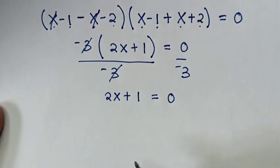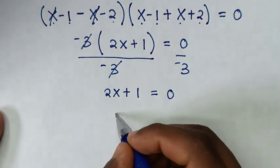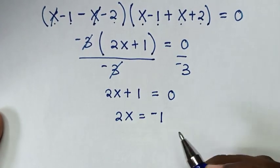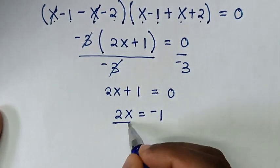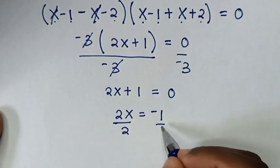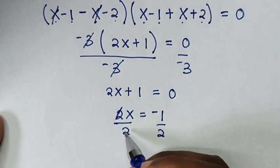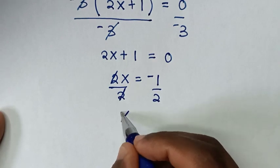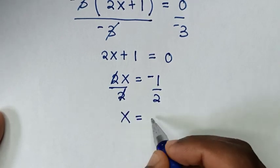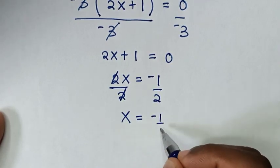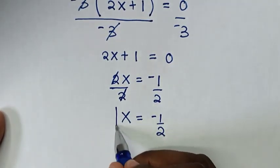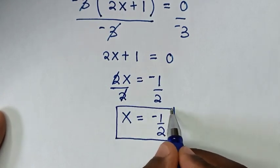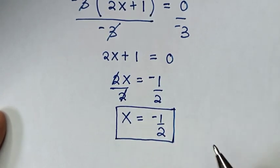In the next step we take 1 to this side, so it will be 2x is equal to negative 1. Then we divide by 2 on both sides, so this and this cancel, and x is equal to negative one half. Therefore this is the final answer for the value of x in this problem.